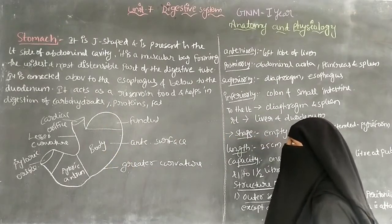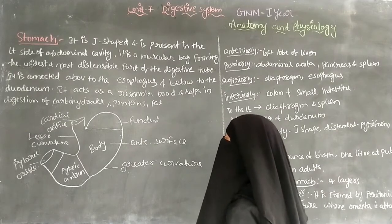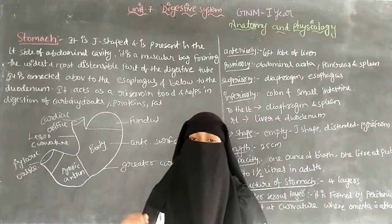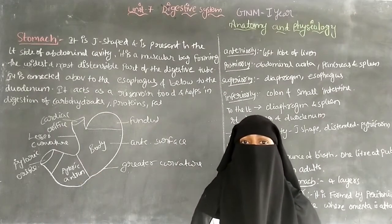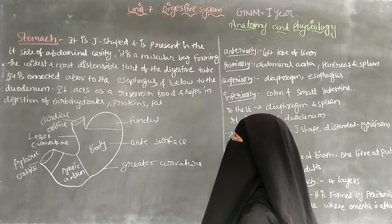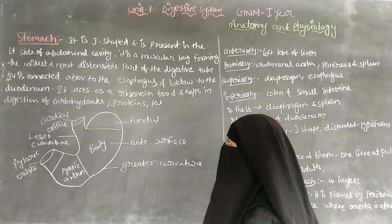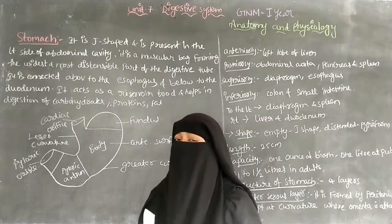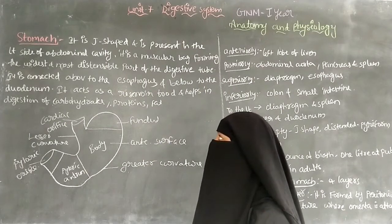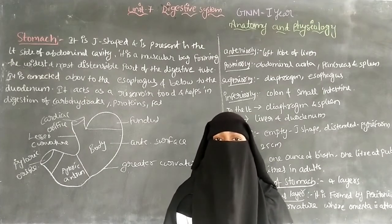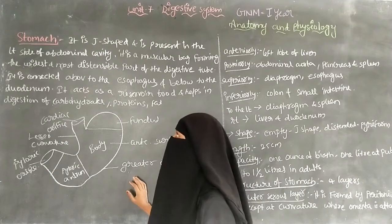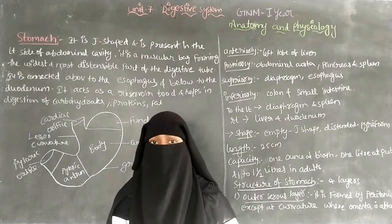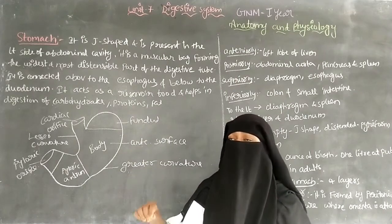Today's topic is the stomach. It is J-shaped and is present in the left side of the abdominal cavity. The stomach is a muscular bag forming the widest and most distensible part of the digestive tube. Distensible means the stomach can be stretched — when you eat food the stomach becomes distended, and when no food is taken it becomes contracted.